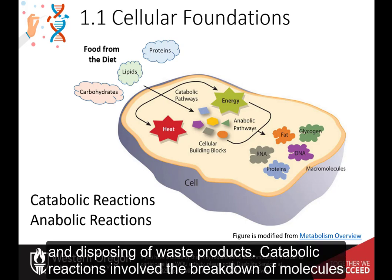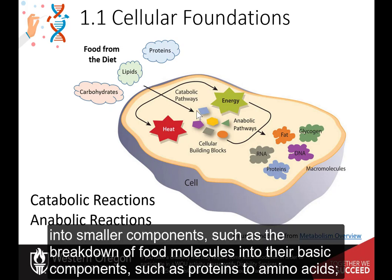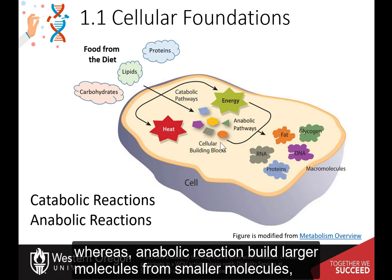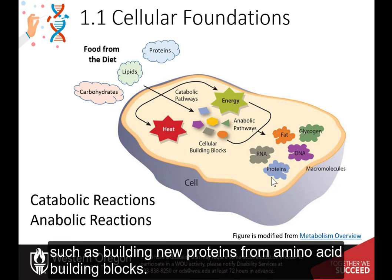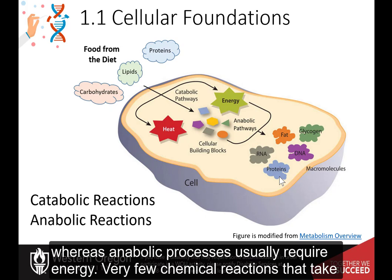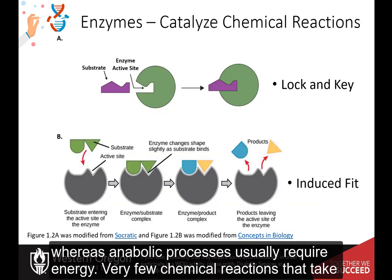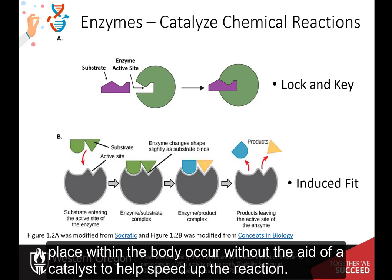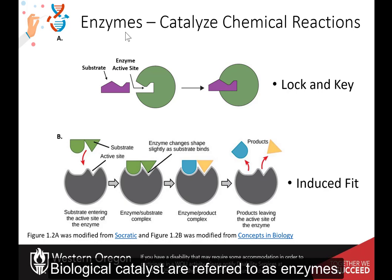Catabolic reactions involve the breakdown of molecules into smaller components, such as the breakdown of food molecules into their basic components, such as proteins to amino acids, whereas anabolic reactions build larger molecules from smaller molecules, such as building new proteins from amino acid building blocks. Catabolic reactions usually release energy, whereas anabolic processes usually require energy. Very few chemical reactions that take place within the body occur without the aid of a catalyst to help speed up the reaction. Biological catalysts are referred to as enzymes.